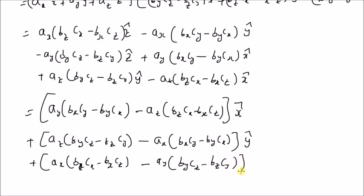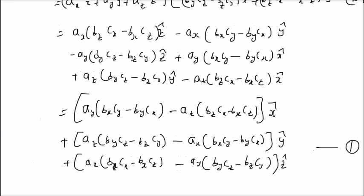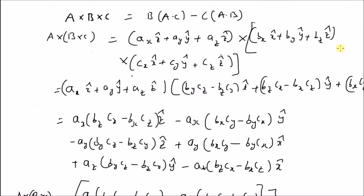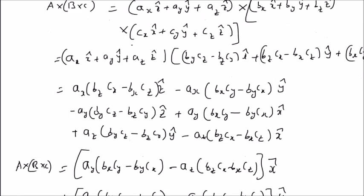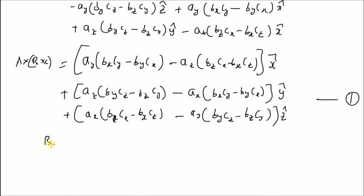So this is equation one — the cross product of three vectors A cross (B cross C). Now we want to derive the right hand side, that is B times (A dot C) minus C times (A dot B).